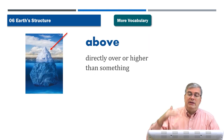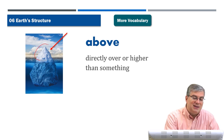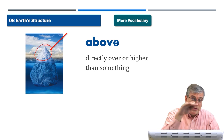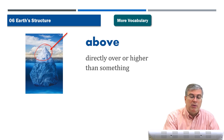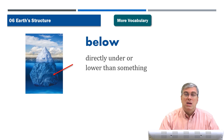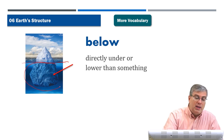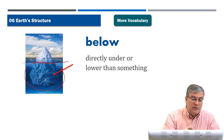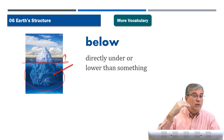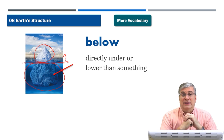'Above' means directly over or higher than something. An iceberg is a good example — 90% of the iceberg is below water, and 10% is above water. The part over the surface is above; the part under the surface is below. 'Below' means directly under or lower than something. Above and below are direct opposites.